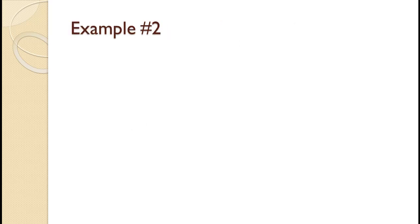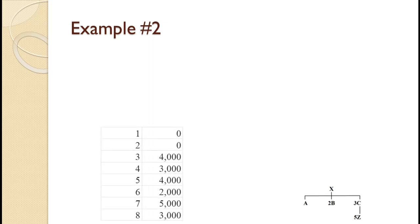Here is an example for you to try. To concentrate on the process, we will keep the MRP grids fairly simple. For the second example, the independent demand item is an X. It is made up of 1 A, 2 Bs, and 3 Cs. Each C is made up of 5 Zs. Gross requirements for independent item X are shown on the screen. I am not giving you gross requirements for A, B, C, or Z because we will calculate them as part of the MRP planning process.